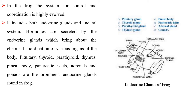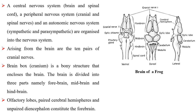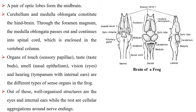A central nervous system, a peripheral nervous system and an autonomic nervous system are organized into the nervous system. Arising from the brain are ten pairs of cranial nerves. The brain box is a bony structure that encloses the brain. The brain is divided into three parts: forebrain, midbrain and hindbrain. Olfactory lobes, paired cerebral hemispheres and unpaired diencephalon constitute the forebrain. A pair of optic lobes form the midbrain. Cerebellum and medulla oblongata constitute the hindbrain.